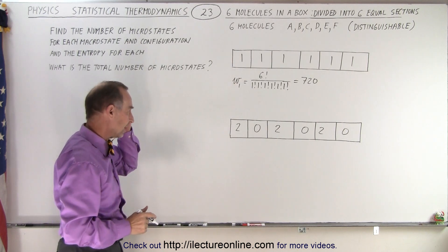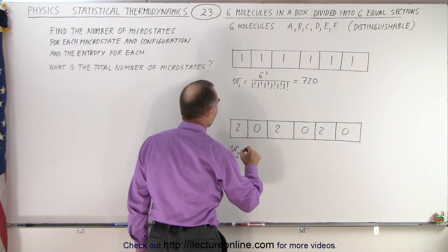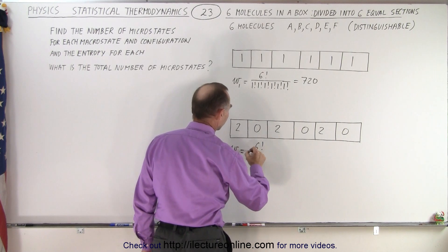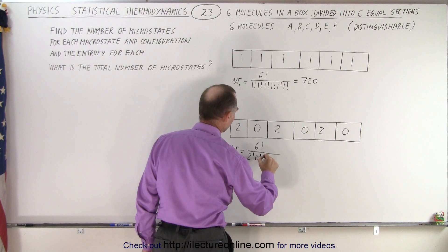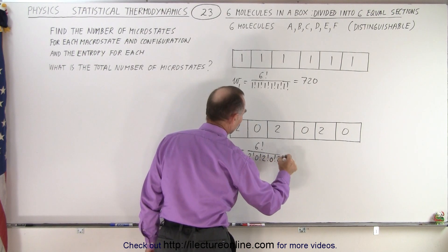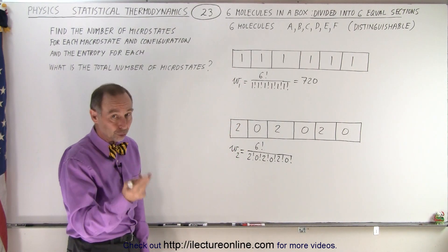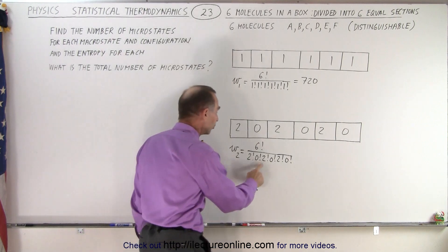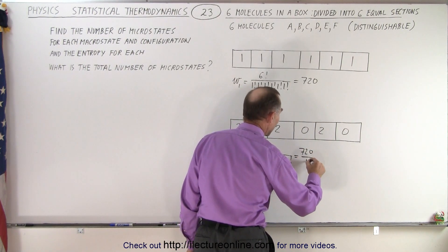How about this case right here? Well let's call that microstate number 2 and that would then equal 6 factorial for the total number of molecules divided by 2 factorial, 0 factorial, 2 factorial, 0 factorial, 2 factorial, 0 factorial. Notice that 0 factorial is equal to 1, 2 factorial is equal to 2, 1 times 2, so that's 2 times 2 times 2 which is 8, so that would be 720 divided by 8.